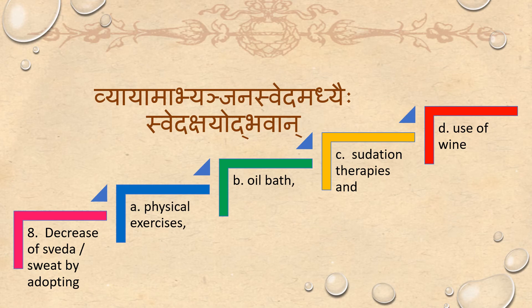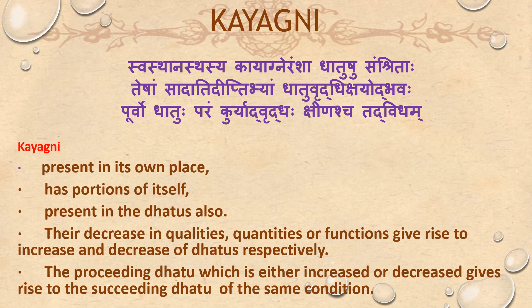For decrease of Sveda (sweat), the treatment is Vyayama (physical exercise), Abhyanjana (oil bath), Sveda (sudation therapy), and Madya (use of wine).